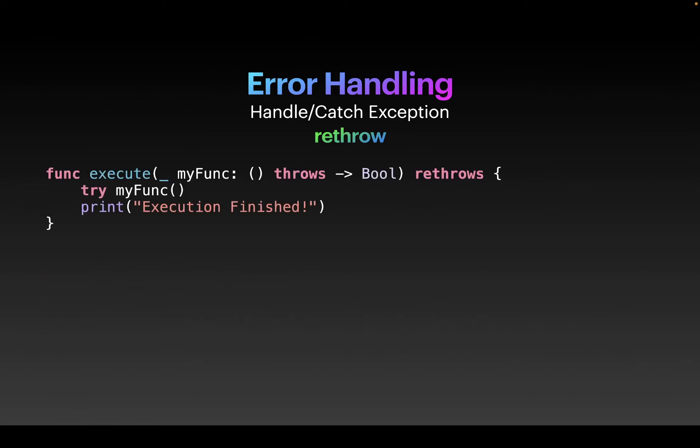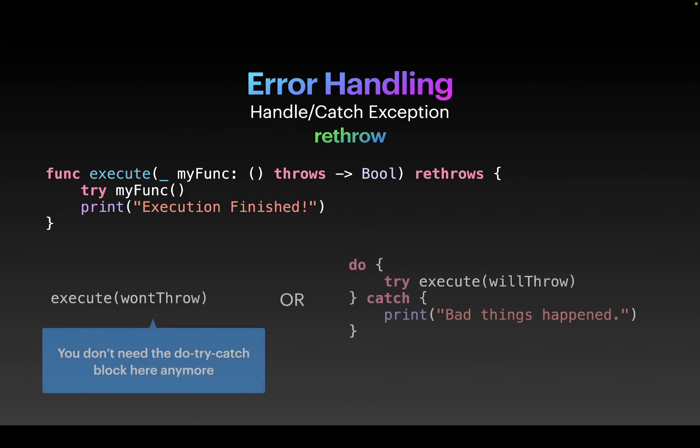That's where we want to use this keyword called rethrows. Instead of marking the execute function as throws, we replace that keyword with rethrows. By doing that, Swift can figure out the code flow. So when we call execute and pass the function that won't throw, you just call that — you don't need to do the do-try-catch block. Otherwise, if you go with the throws keyword after the execute function, you have to do the do-try-catch block, or the compiler won't let you compile the code. That's where the rethrows keyword can be helpful.